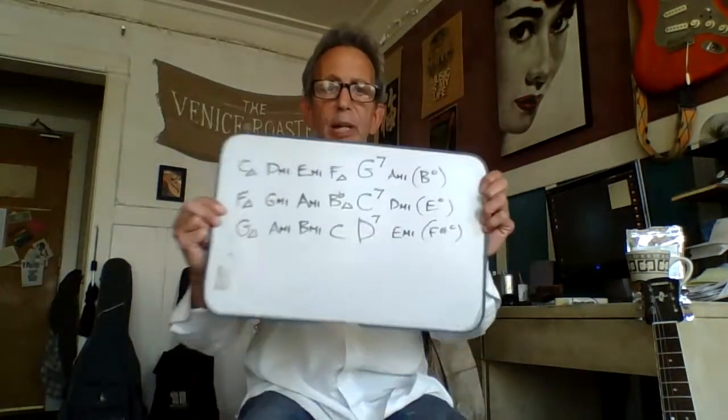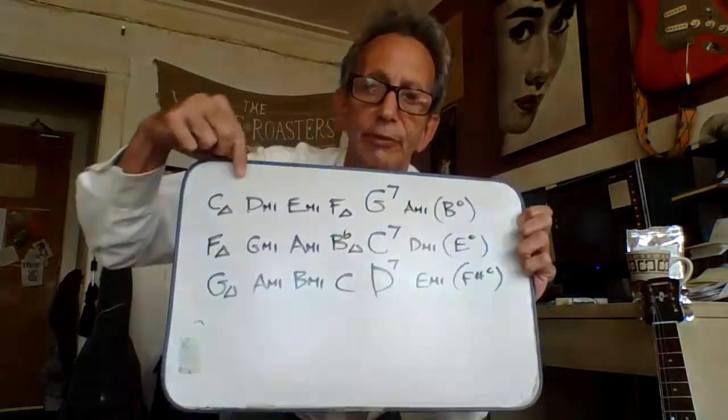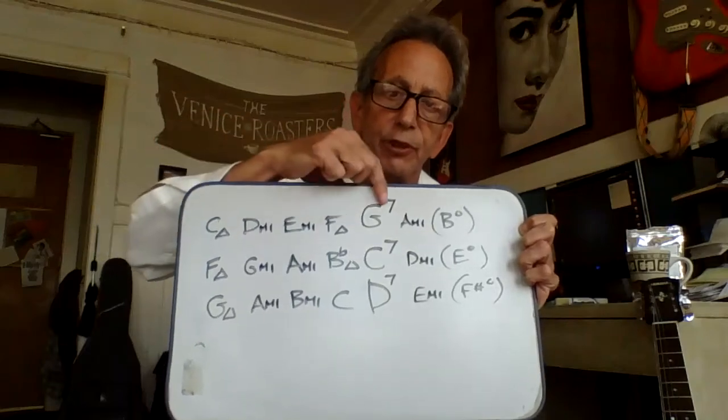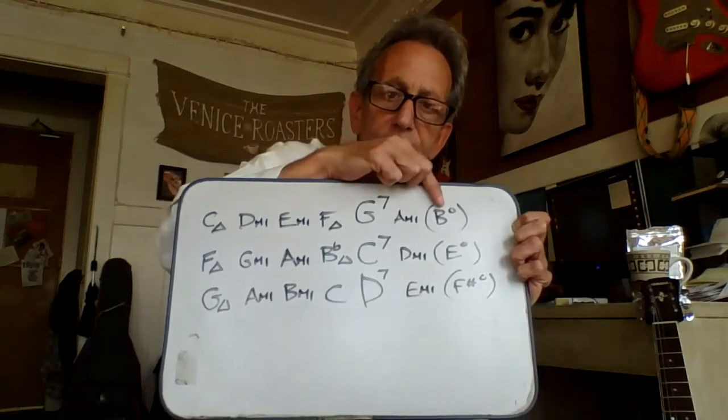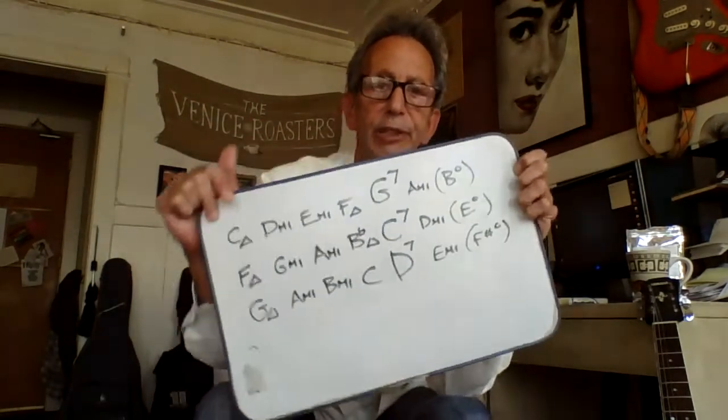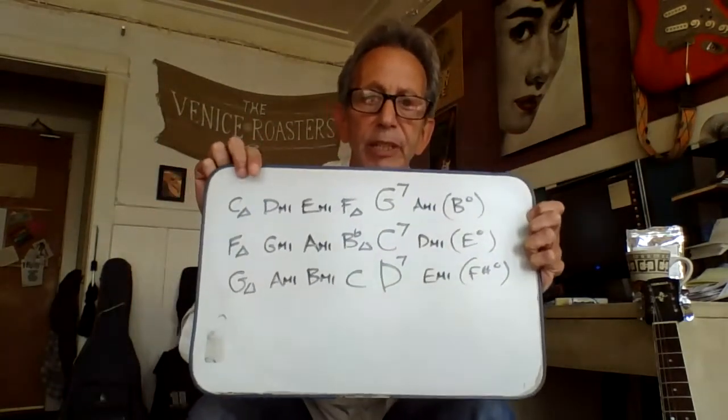So what is the four dominant seventh? What do we mean when we say that? Look at the top row here — the key of C. We have C, D minor, E, F, G7, A minor, and B diminished. Those are the chords of the key of C.